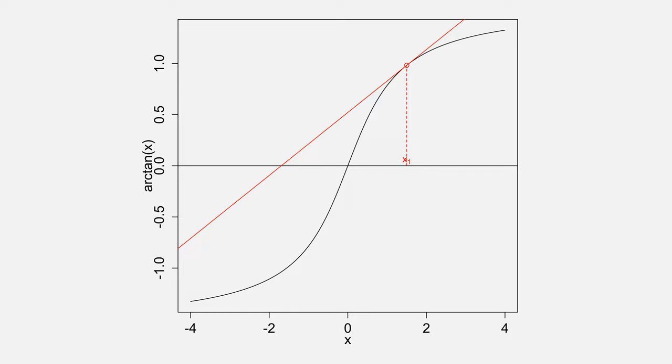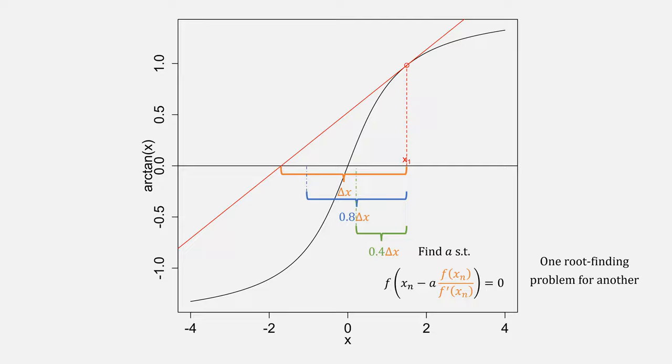From our normal step size, you could try, for example, 0.8 would cause a variable change there, 0.4 would be closer. In reality, we need to find A such that plugging A into this equation will give us 0, meaning we've changed one root-finding problem for another.